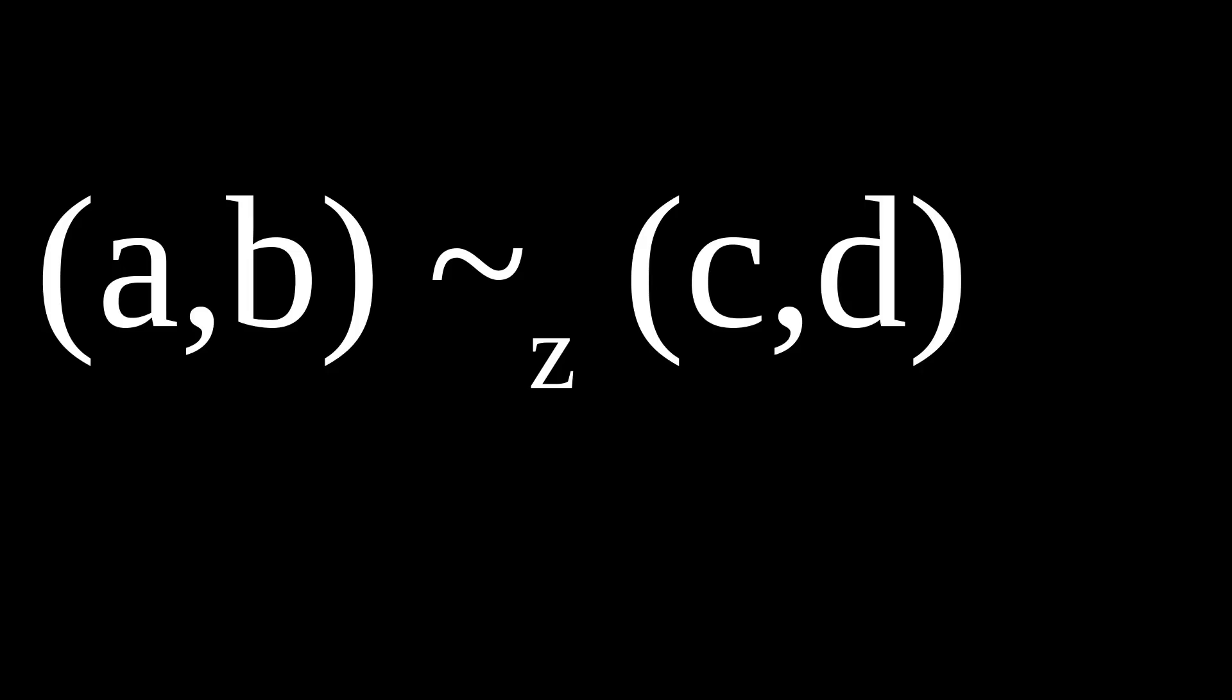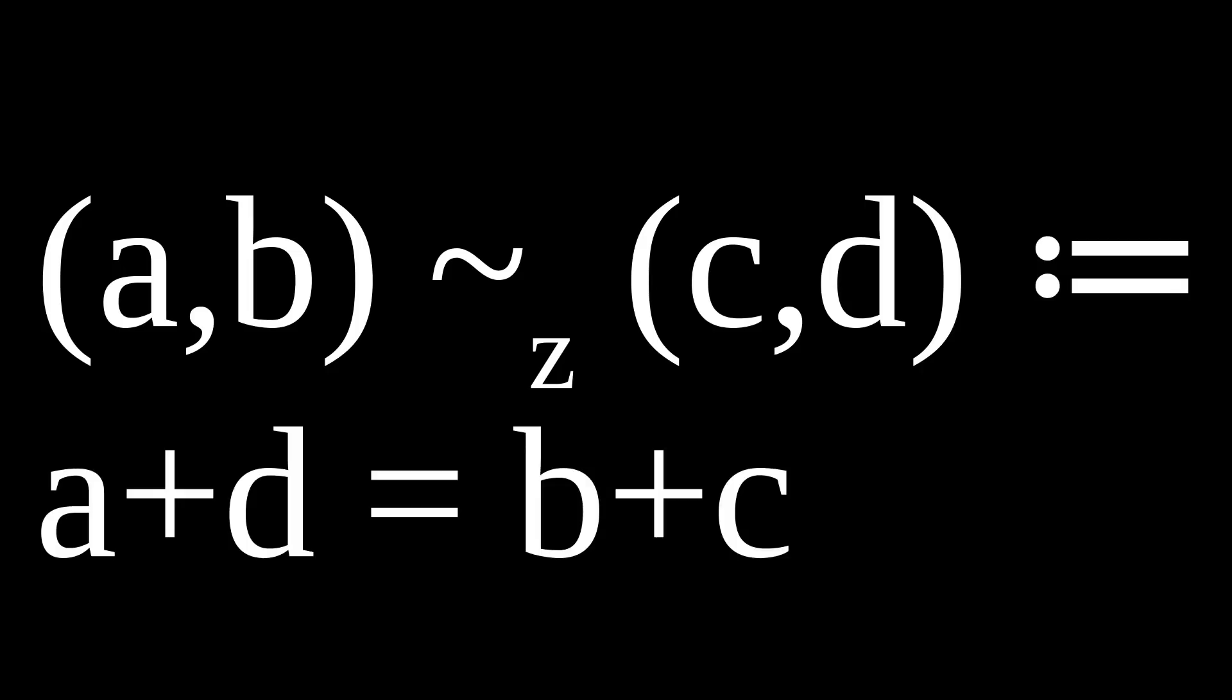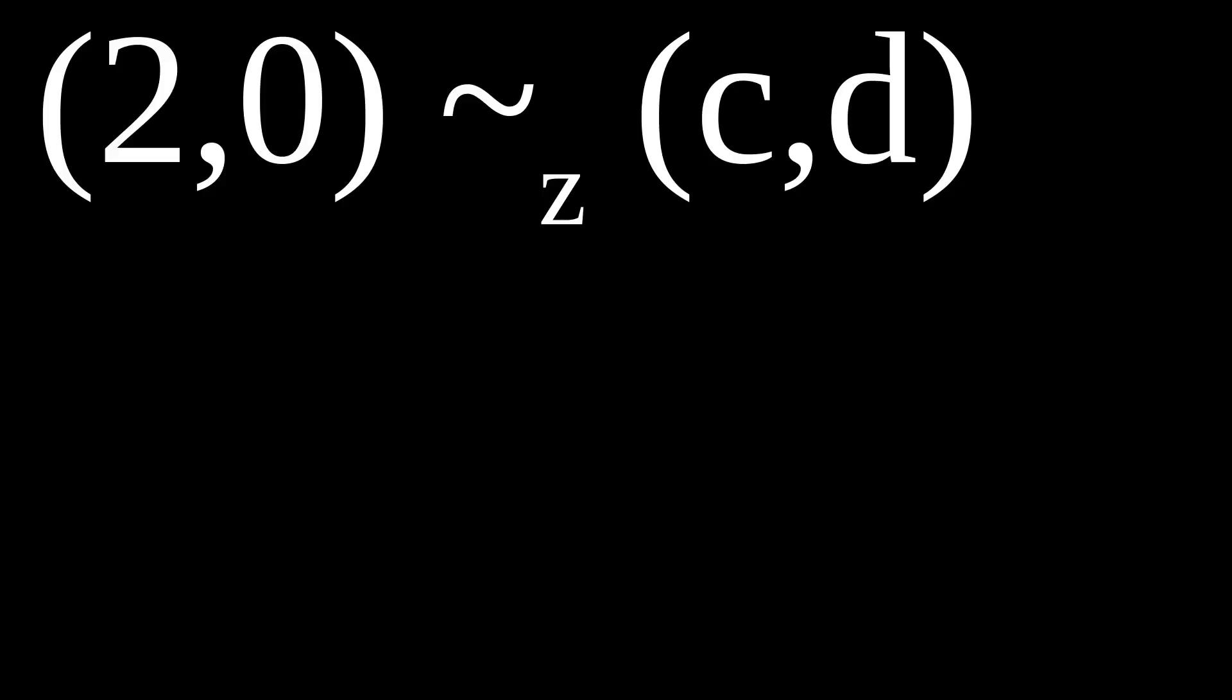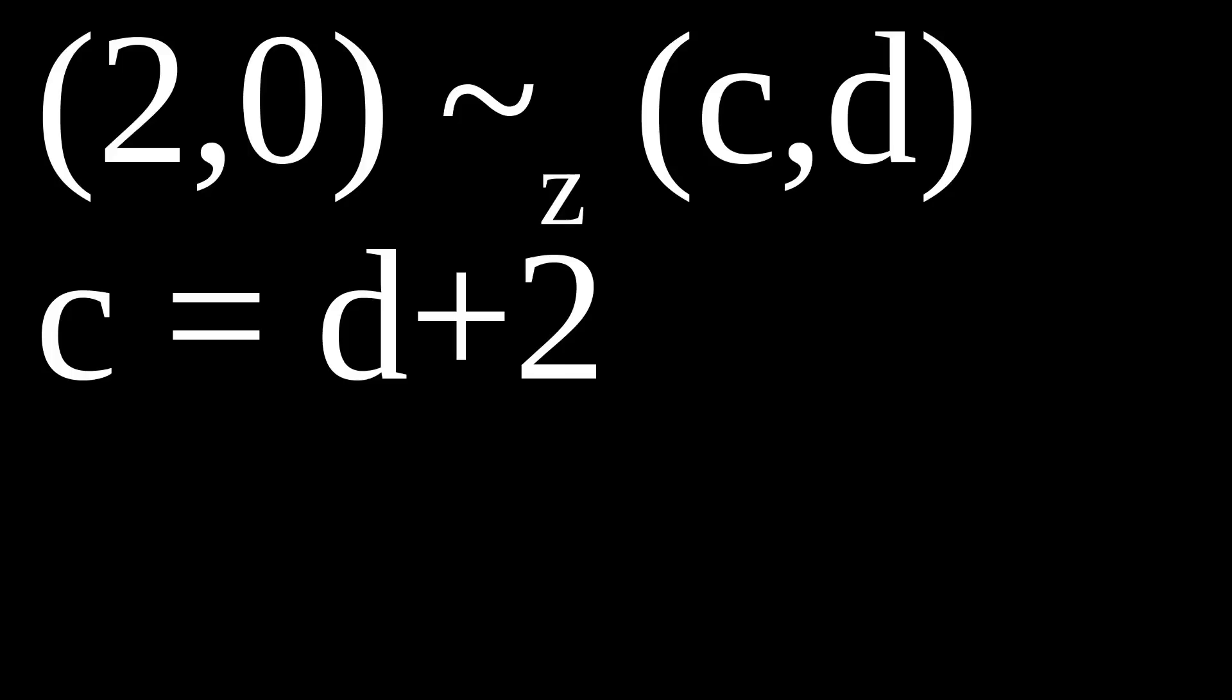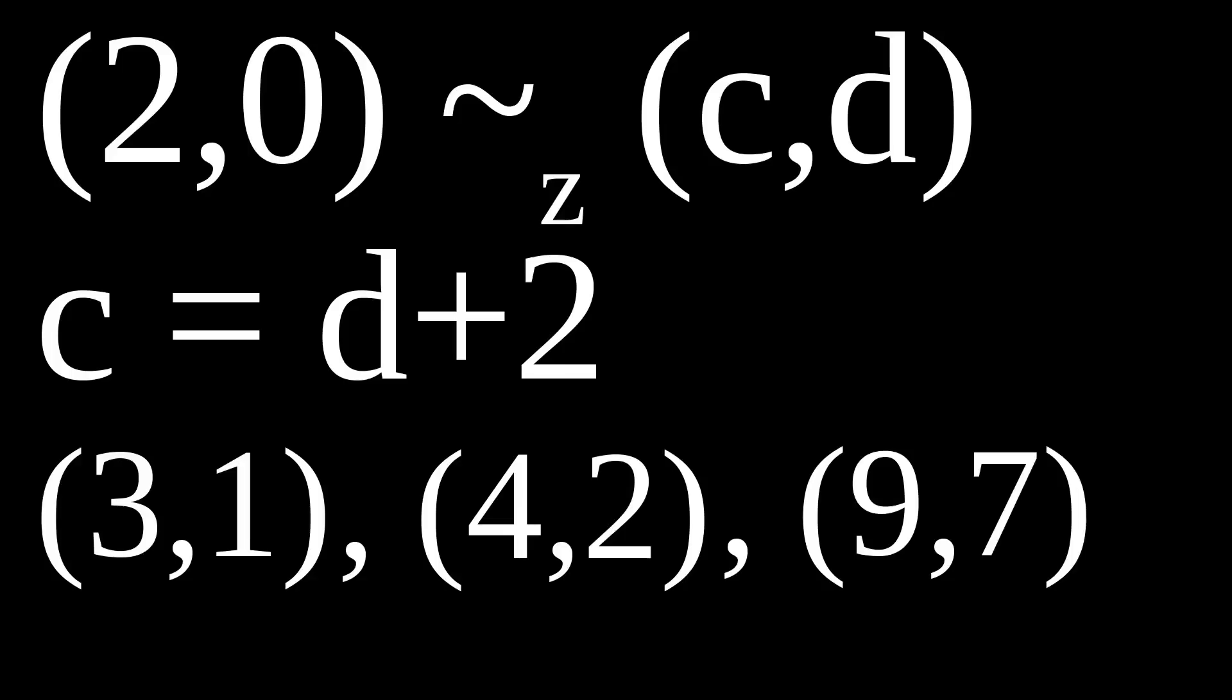Consider pairs of natural numbers. Let two such pairs be equivalent according to a relation tilde z, if a plus d equals b plus c. For example, a pair c,d being equivalent to 2,0 means 2 plus d equals 0 plus c, or c equals d plus 2. So 3,1, 4,2, 9,7, etc. are all equivalent to 2,0.